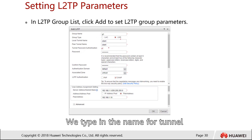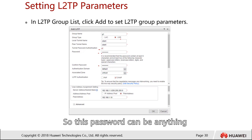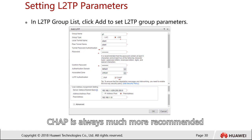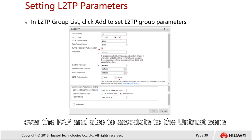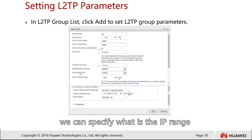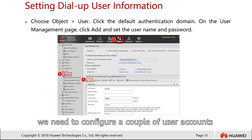Next we configure the L2TP parameters. We specify a name, set the type to LNS, and type in a name for the tunnel. Optionally, we can enable tunnel password authentication — this is a shared password and can be any value. Then we set the PPP parameters, choosing between PAP or CHAP — CHAP is always more recommended over PAP. We also associate the interface to the untrust zone and specify the IP range to assign to clients upon connection.